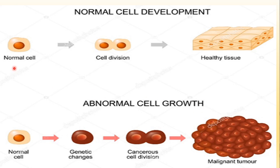To summarize with another picture: a normal cell divides to form a healthy tissue. But abnormally, because cells have lost the property of contact inhibition due to some genetic changes, they divide without that inhibition. Their division goes on in a very uncontrolled manner, resulting in what we call tumor formation.